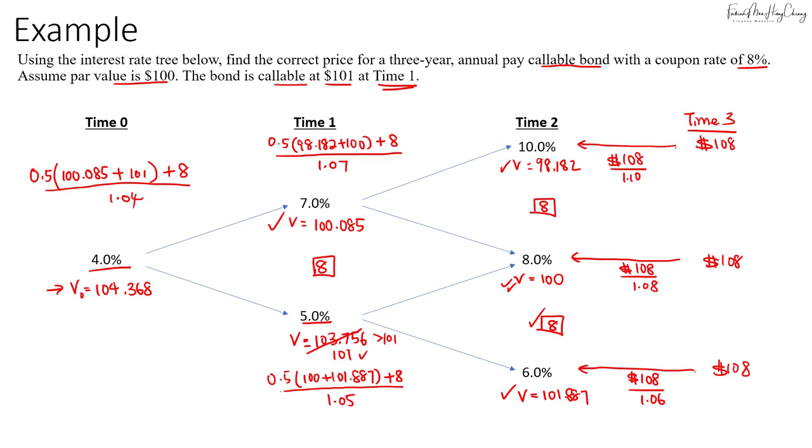If we were to do this calculation without assuming a call option, which was what I did in my previous video, the value of the option-free bond would have been 105.693. So when we take the difference between the two values, we will get the value of the call option. If you're required to calculate the value of the call option, take the value of the option-free bond and subtract the value of the callable bond. That would give us 104.368 minus 105.693.